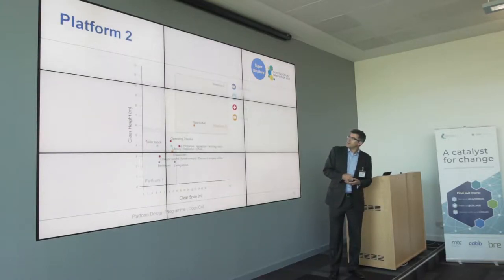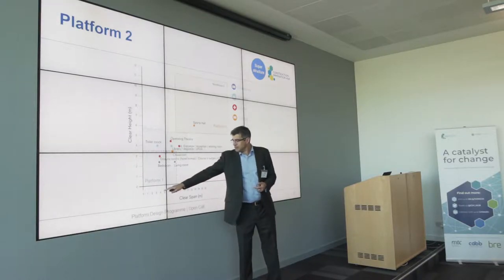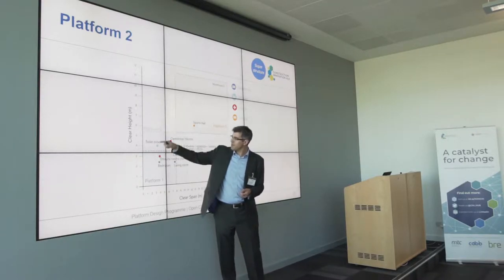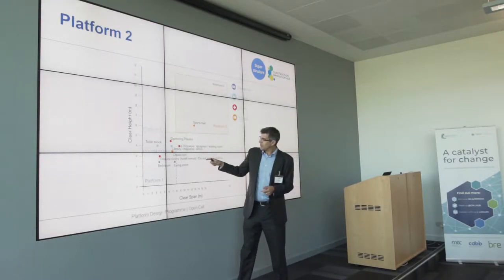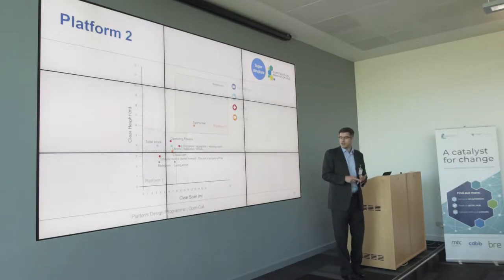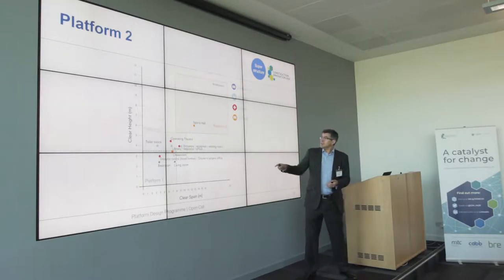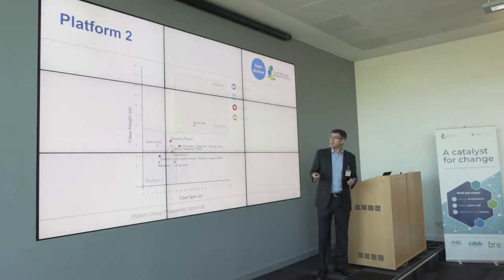We did a thought exercise a couple of years ago where Keith and I and a group of others sat in a room and said: if you think about the way government buys things, you could plot every space it buys in terms of room size and height. Our guess was you'd end up with a cluster of spaces served by a small-scale residential platform — student accommodation, secure accommodation for MOJ, single living for Defence — a mid-span general-purpose platform for schools, classrooms, small offices, and apartment buildings, and a big empty sheds kit of parts.